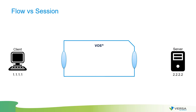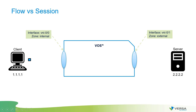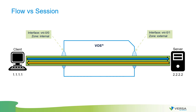Let's review flows and sessions. Imagine a VersaOS device with an internal zone with an internal interface and an external zone with an external interface, with a client and server connected accordingly. When the client initiates a session to the server and the server replies with an acknowledgement, they establish a session. The blue line shows the forward flow, the yellow line shows the reverse flow, and the green is the full session.